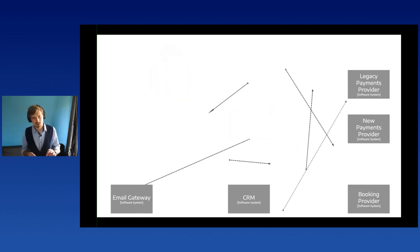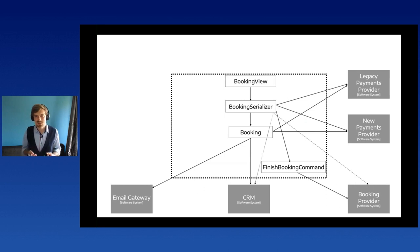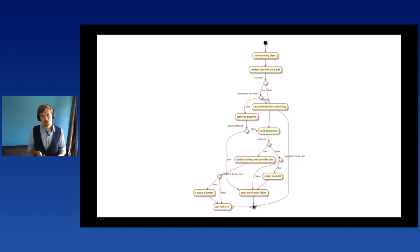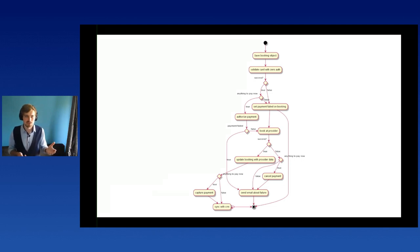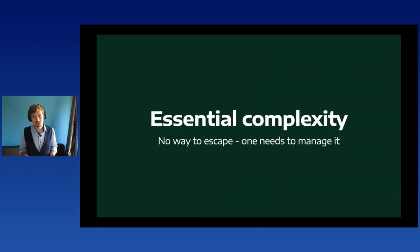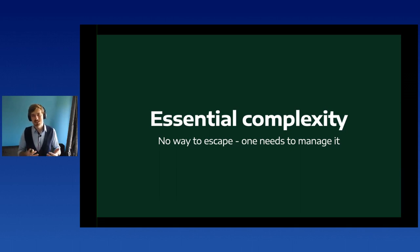If we zoom in on the codebase, the design doesn't really support this complexity — literally every class talks to every other system. Exceptions may leak to the serializer from the booking provider. And if we visualize the algorithm as a decision tree, the code is complex not only because of time pressure or lack of knowledge, but because the feature itself is inherently complex. This is called essential complexity — there is no way to escape it, only to manage it.